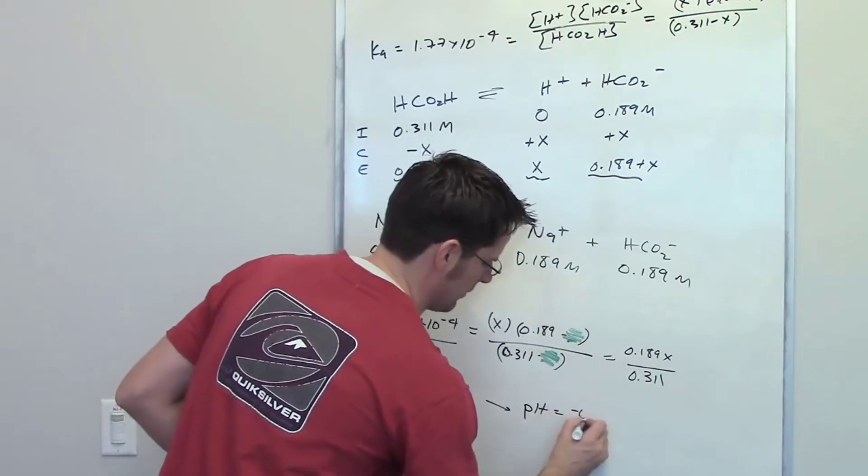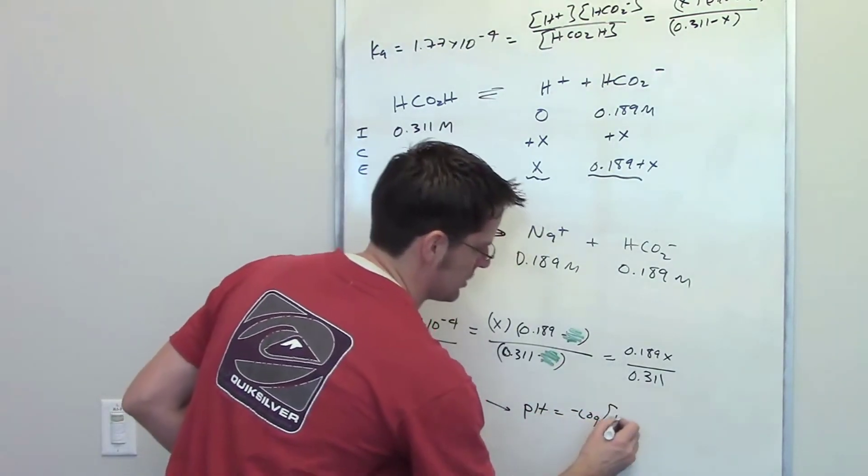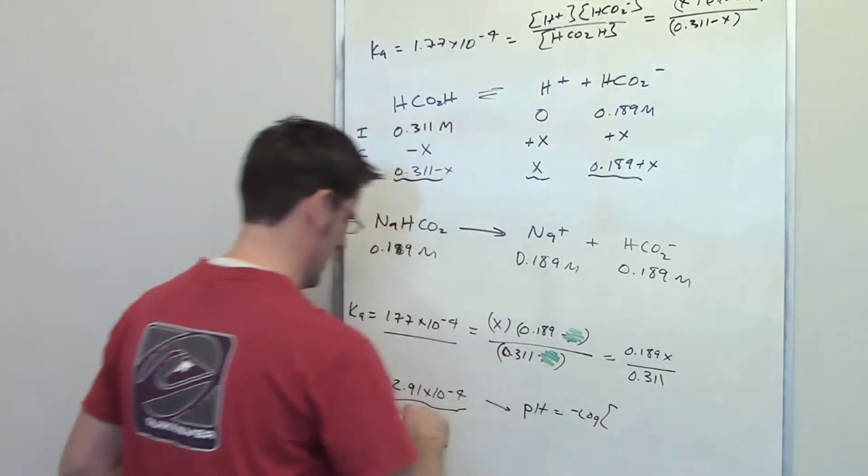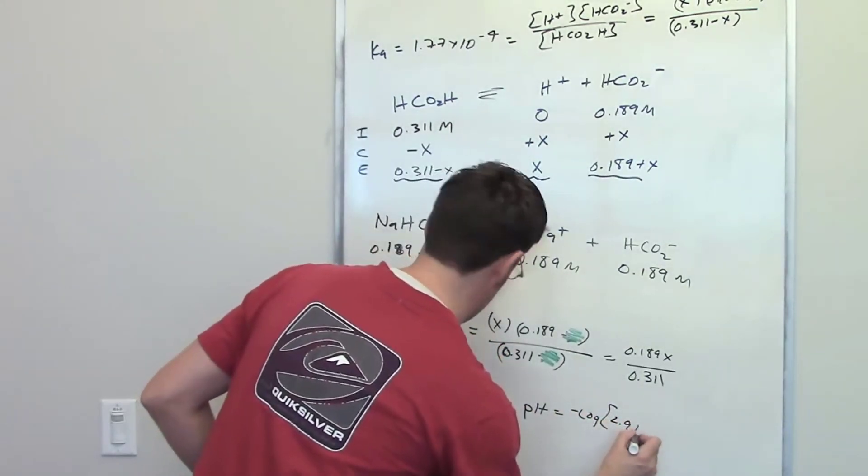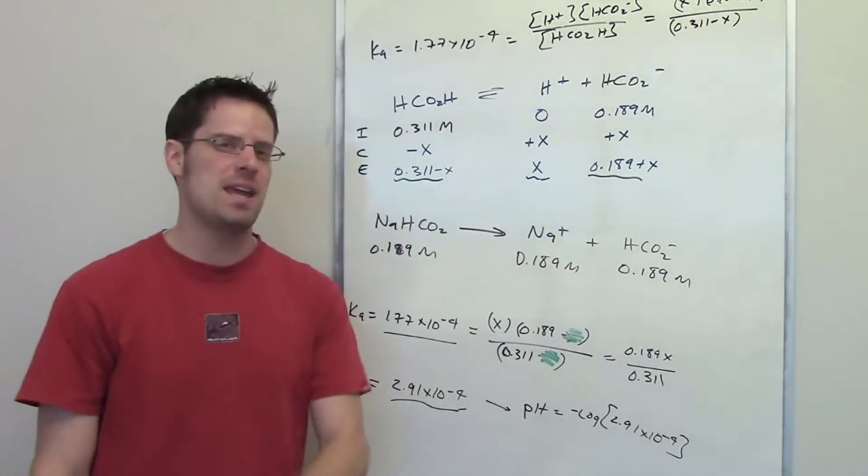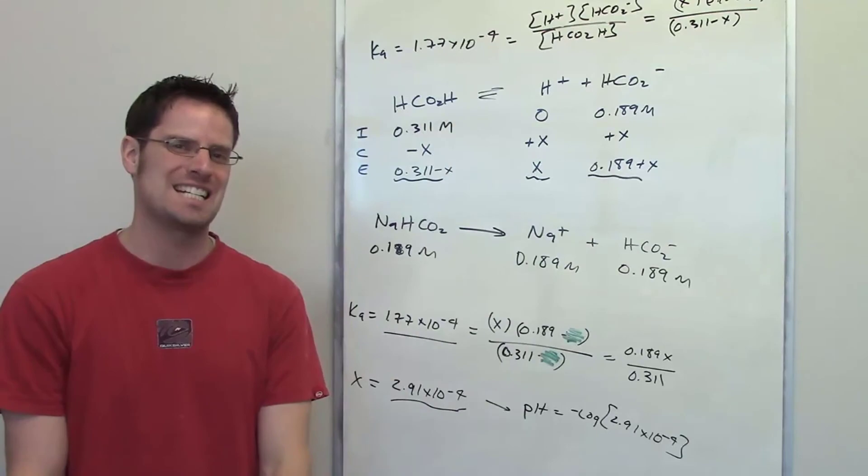I can then use my next equation, which is that pH is equal to the negative log of the equilibrium concentration of H plus, or, in other words, I can put in this value right here, the negative log of 2.91 times 10 to the negative fourth, and that will give me my final pH for this equilibrium solution.